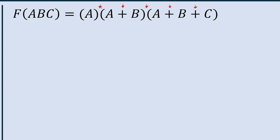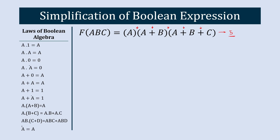So to represent this equation we need a minimum of 5 gates. Now let's simplify this equation, and at the end of the simplification process we will check how many gates we need to implement the same equation.